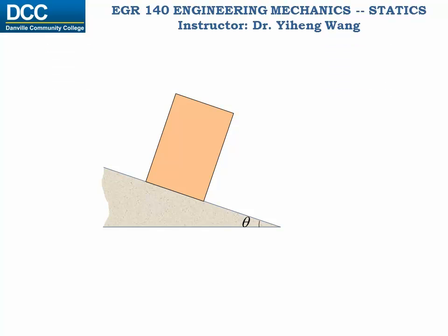As usual, we start solving this problem by sketching the free body diagram of the crate. We isolate it from its surroundings and state the forces acting on it. First, we have the weight force W acting at the gravitational center of this object. Because we do not concern ourselves with the tipping over scenario, we do not need to worry about moment equilibrium, so the actual location of the gravitational center is not important.